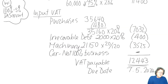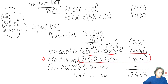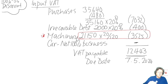The machinery was VAT inclusive, so there's a slightly different calculation there. When you add all of this up — output VAT minus input VAT — you end up with VAT payable of 12,443.